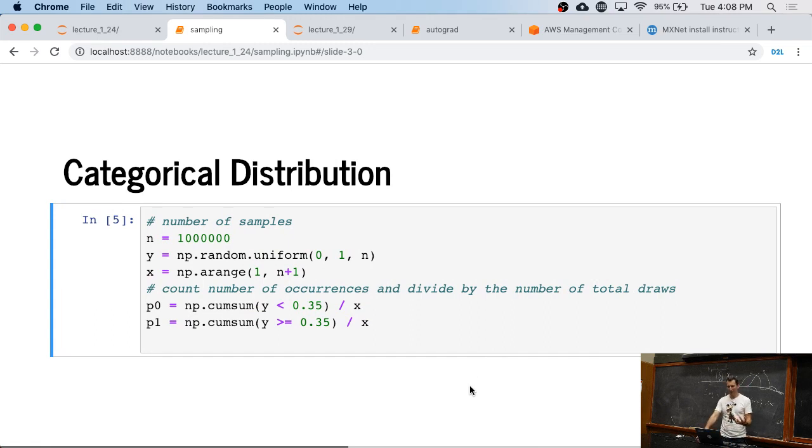I can do things like categorical distributions. So, in this case, I'm just looking at two possible outcomes, zero and one. And what I'm doing is I'm picking an interval between zero and one. And if the random variable is below 0.35, I say it's outcome zero, otherwise it's outcome one. So, I just hand engineer that sampler. It's a pretty boring sampler. It's like tossing a biased coin.